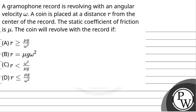Hello! Let's read the question. The question says that a gramophone record is revolving with an angular velocity omega. A coin is placed at a distance r from the center of the record. The static coefficient of friction is mu. The coin will revolve with the record if...